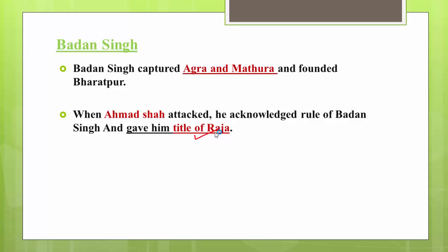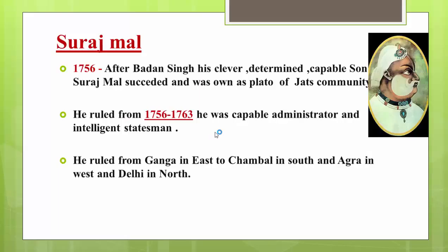After Badan Singh came an important Jat leader — Suraj Mal. He was a very important leader of the Jat community, and there are many things about this efficient leader. He was an adopted son, and he assumed the throne in 1756. He was very clever, determined, and capable, and during his time the Jat kingdom became much more powerful.